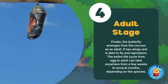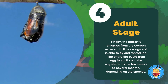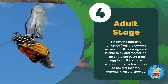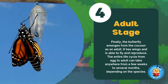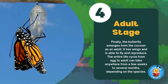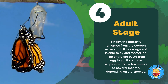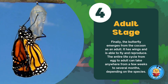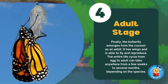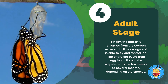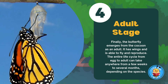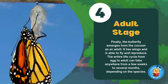Adult Stage. Finally, the butterfly emerges from the cocoon as an adult. It has wings and is able to fly and reproduce. The entire life cycle from egg to adult can take anywhere from a few weeks to several months, depending on the species.